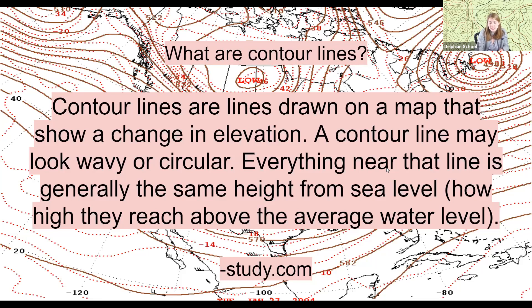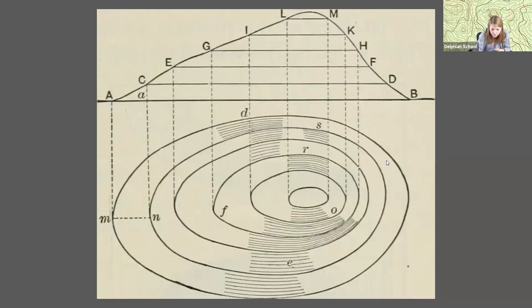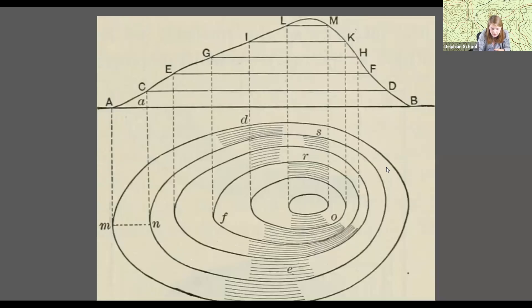Everything near a contour line is generally the same height from sea level. It's a little hard to see in this background image because part of it's covered, but everything that follows one line is at about the same height. It could go all across the map and all around, but as long as it's on the same line it's going to be at the same elevation.